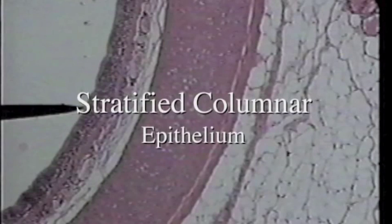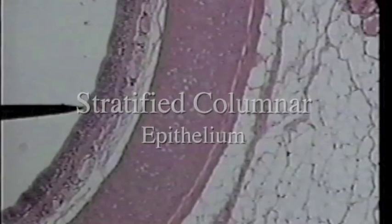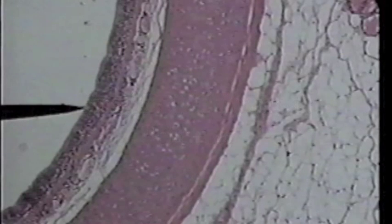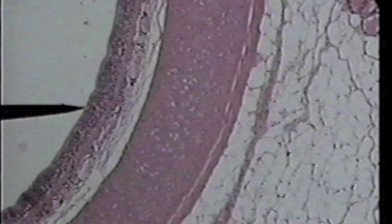This slide is the trachea at low power. The tip of the pointer is on the epithelial layer of the trachea. This is actually a layer of stratified columnar cells, but you can't really tell that this epithelial layer is many layers of columnar cells on low power.